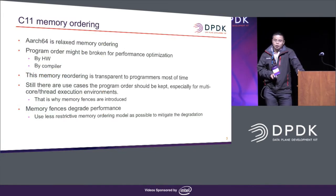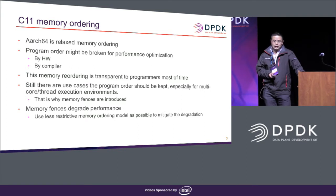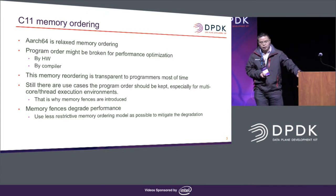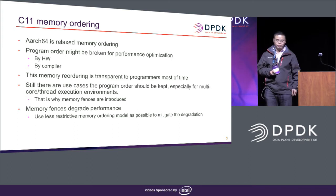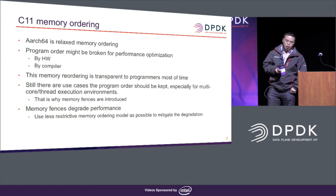For C11 memory ordering, ARM64 is a relaxed memory ordering model. That means the program order might be broken for performance optimization. This is done by hardware or by a compiler. This memory reordering most of the time is transparent to programmers. But we still have some use cases where the program order should be kept to make things correct, especially for use cases in multi-core or multi-thread environments. That's why memory fences were used in DPDK. But generally these memory fences will degrade overall performance.